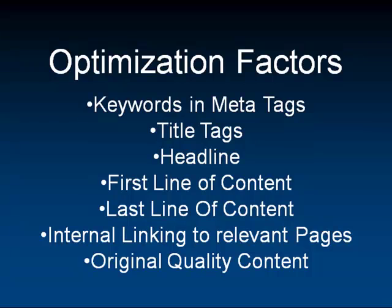You want to have keywords in your meta tag descriptions. You want to have your keyword in your title tags. You want to have the keyword in the headline or the first line of content, and also in the last line of content. You can sprinkle your keyword throughout the post — you just want to make sure it doesn't look spammy and it flows naturally.